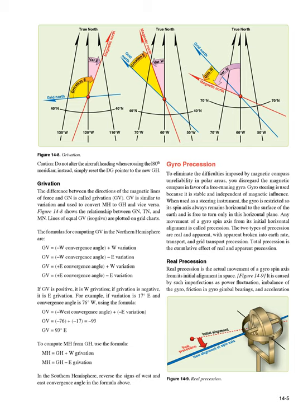For example, if variation is 17 degrees east and convergence angle is 76 degrees west, using the formula GV equals W convergence angle minus E variation: GV equals minus 76 plus minus 17 equals minus 93. GV equals 93 degrees east. To compute MH from GH, use the formula: MH equals GH plus W gravation; MH equals GH minus E gravation. In the southern hemisphere, reverse the signs of west and east convergence angle in the formula above.